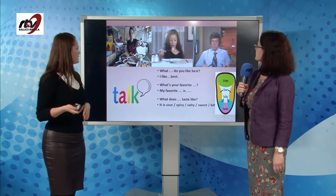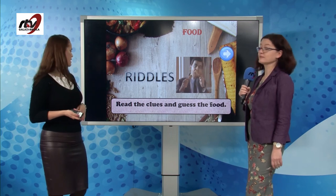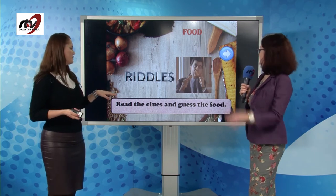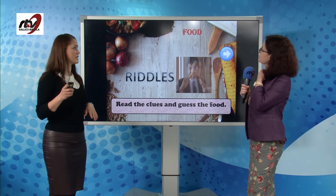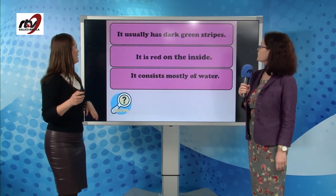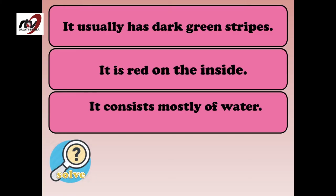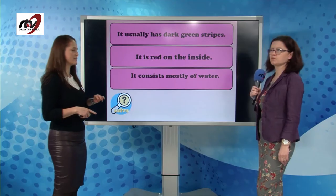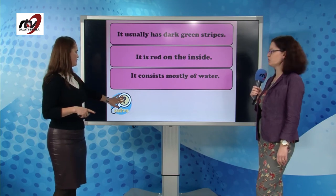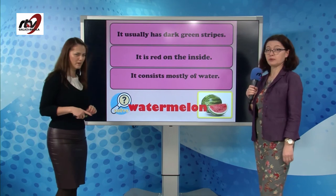Are you ready for some riddles? We will read the clues and you will have to guess the food. It usually has dark green stripes. It is red on the inside. It consists mostly of water. What is it? It's a fruit. It's watermelon.